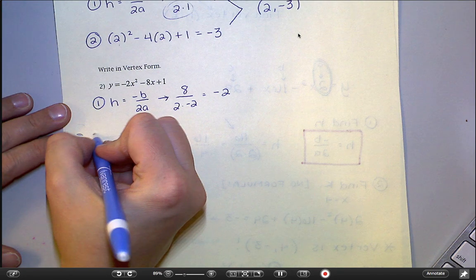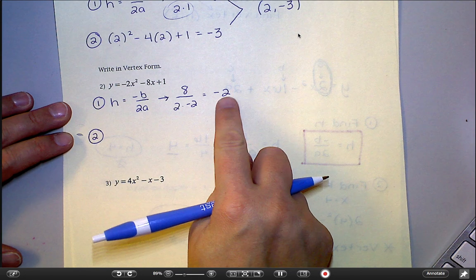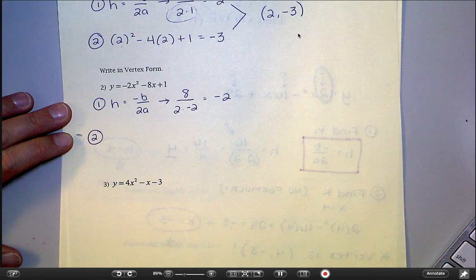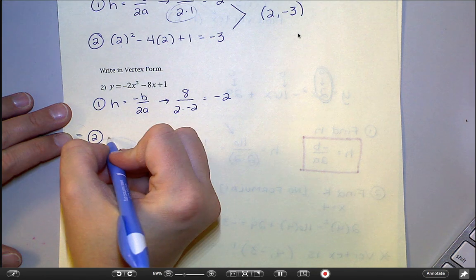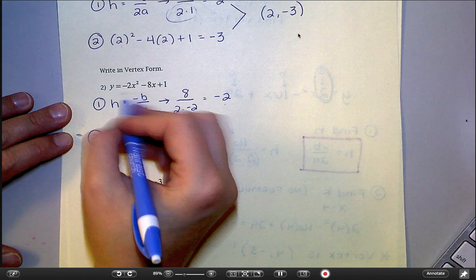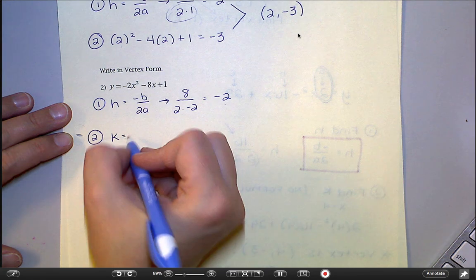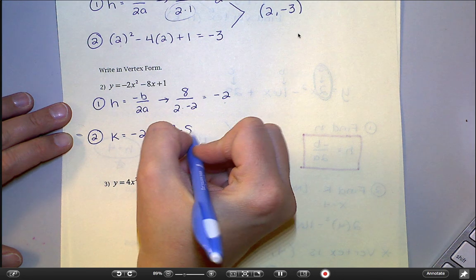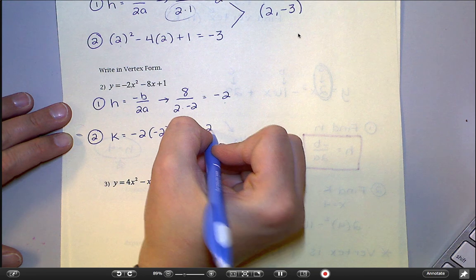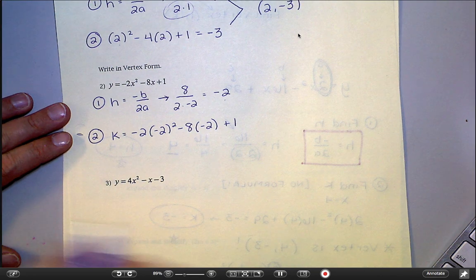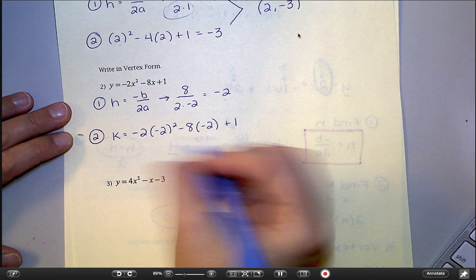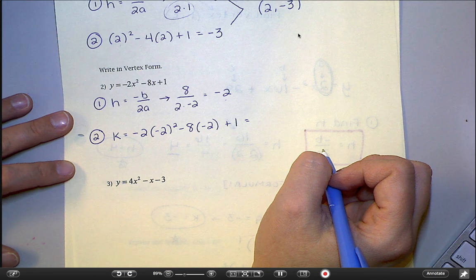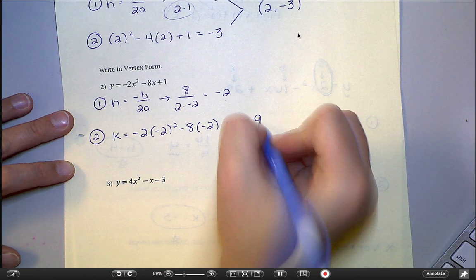And then I'm going to plug this in. Be very careful anytime you're plugging in a negative number. And you'll notice I always put my numbers in parentheses when I plug them in, but really it's the negative numbers where it matters. So to find k, I'm plugging negative 2 in for x up here. So negative 2 times negative 2 squared minus 8 times negative 2 plus 1. You can go ahead and punch that straight into a calculator, but let's see if I can come up with it. I think it's 9. I'm pretty sure it's 9.